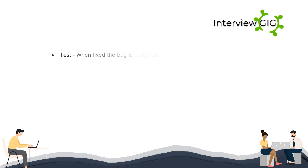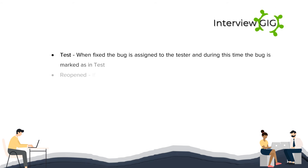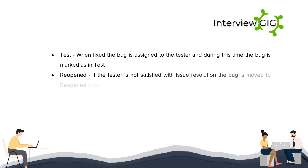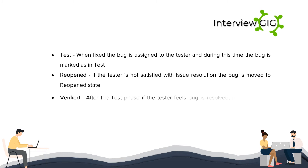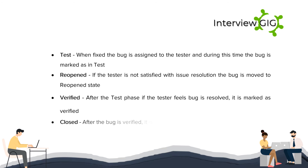Continuing bug states: In Test — when the fixed bug is assigned to the tester; Reopened — if the tester is not satisfied with the issue resolution; Verified — if the tester feels the bug is resolved; Closed — after the bug is verified it is moved to closed status.